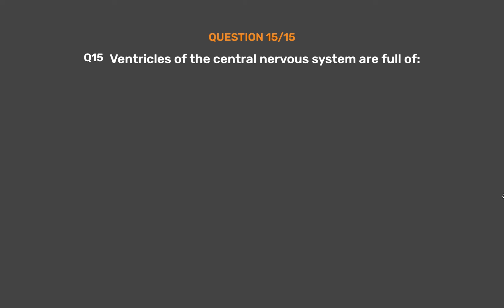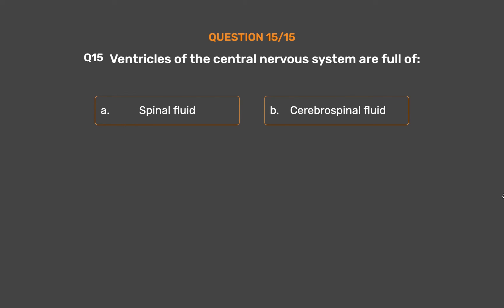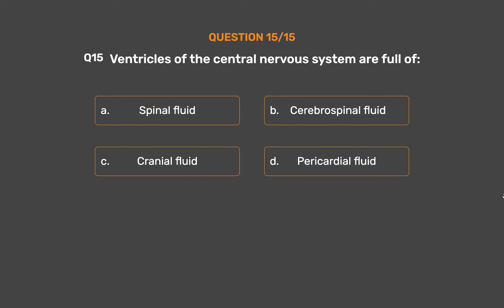Question No. 15. Ventricles of the central nervous system are full of: Option A - Spinal fluid. Option B - Cerebrospinal fluid. Option C - Cranial fluid. Option D - Pericardial fluid.